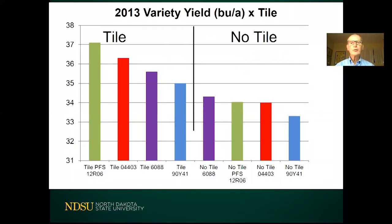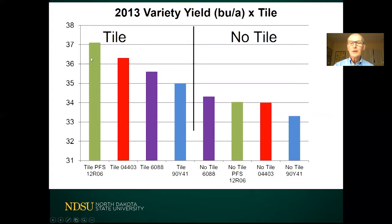One of the factors to consider when talking about tile drainage is that there is often an interaction between management and tile drainage. In this graph we have four varieties. On the right we see the varieties without tile and the left bar shows yield in bushels per acre. The tiled results are a lot higher than the no-tile results, and you can see an interaction between the various varieties in this particular slide.